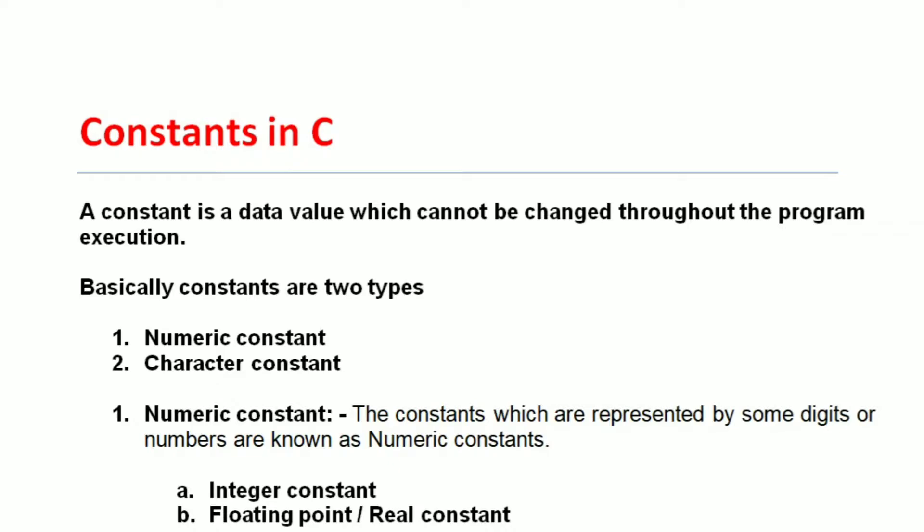First, what is a constant? A constant is a data value which cannot be changed throughout the execution of the program. During program execution, a variable can change, but a constant value always remains constant. For example, pi equals 3.141 — the value of pi is always constant.